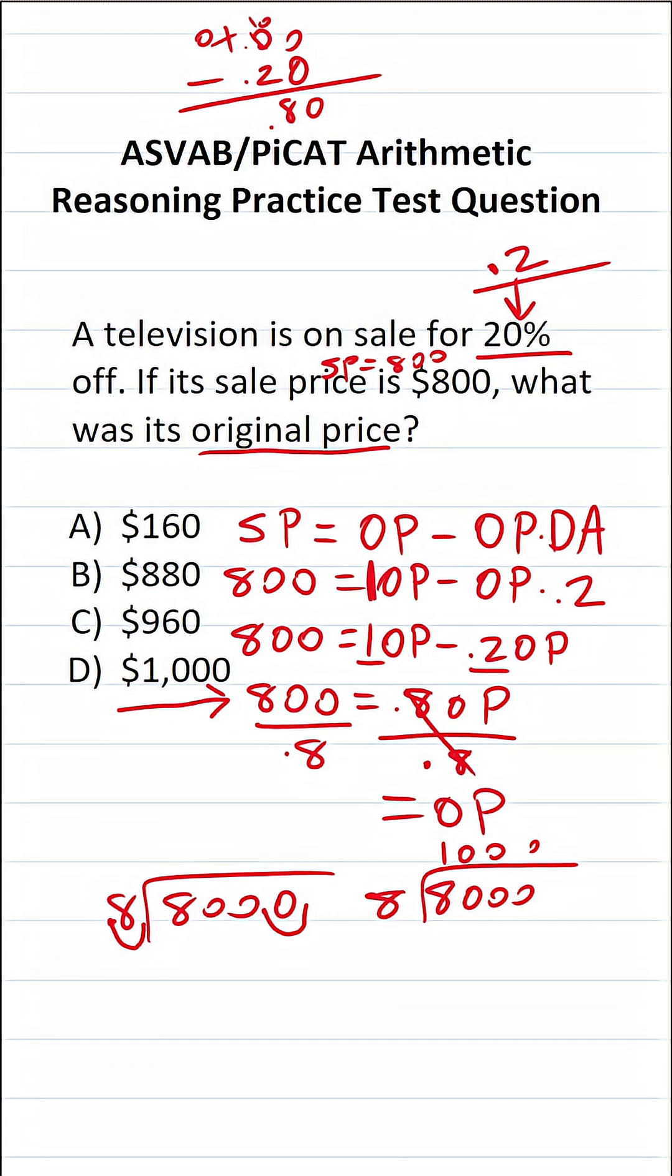8 times 1,000 is exactly 8,000 with no remainder. So we know the original price of this TV is $1,000. So this one is going to be D.